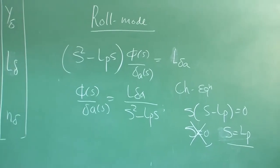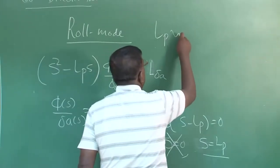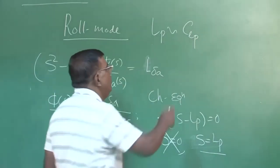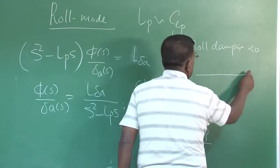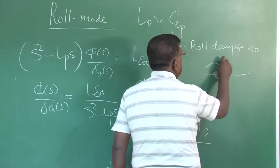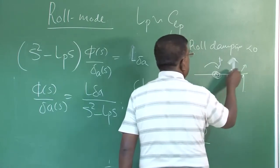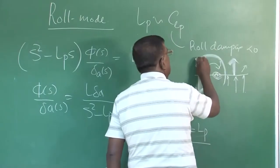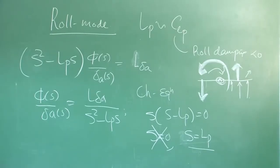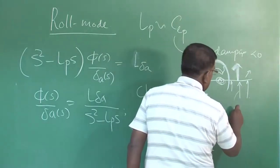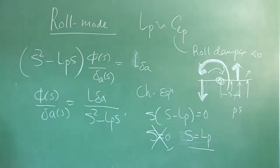C_lp is the roll damping derivative and it is negative. To recall: if the airplane has a roll rate p, at every spanwise station there is an induced angle of attack creating lift. On the advancing wing, lift increases; on the retreating wing, it decreases. This produces a rolling moment opposing p, proportional to p — hence it is called roll damping, and C_lp < 0.